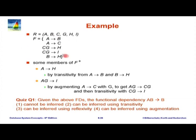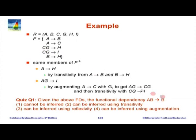The first one we show is A determines H, which is not in the original list. We use transitivity: A determines B, B determines H, therefore A determines H. Here is another one: A G determines I. Transitivity by itself is not enough — augmentation comes to the rescue. Given A determines C, we augment both sides with G to get A G determines C G. Now we have C G determines I, so applying transitivity we get A G determines I. That is the process.